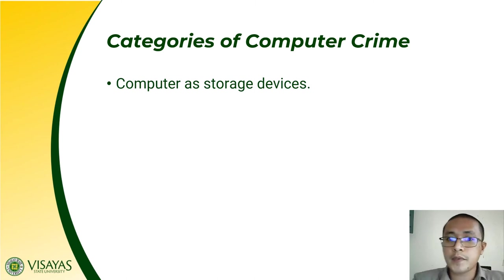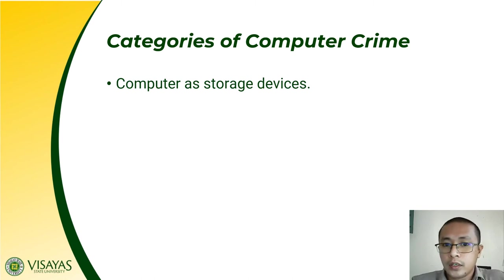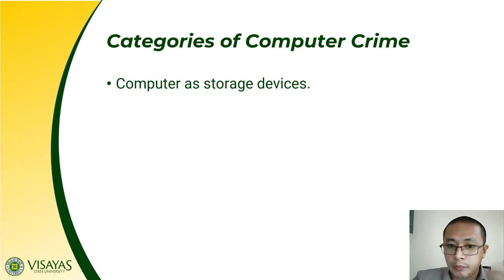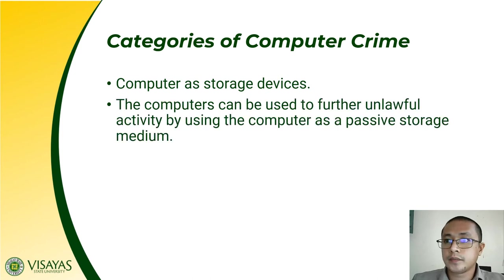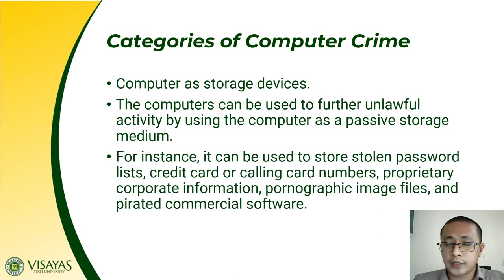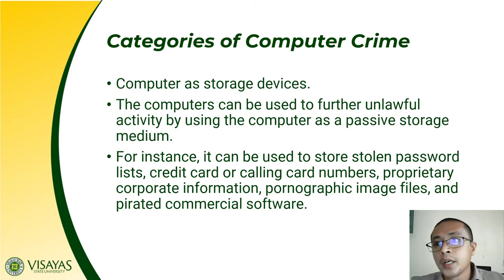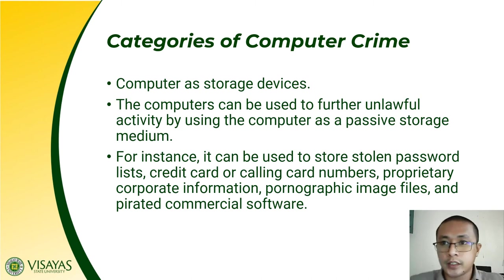The second category is the computer as a storage device, meaning the computer is used to store data which can be classified under cybercrime. They are used as a passive storage medium — for example, storing pornographic materials or stolen credit card numbers without the owner knowing. This includes storing stolen password lists, credit card or calling card numbers, proprietary corporate information, pornographic image files, and pirated commercial software.